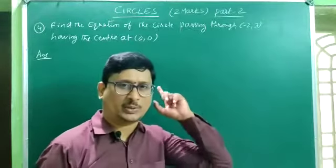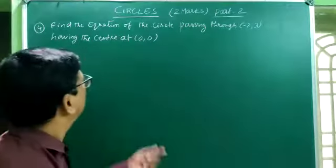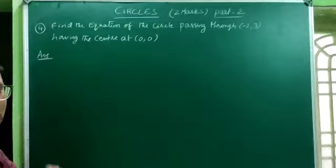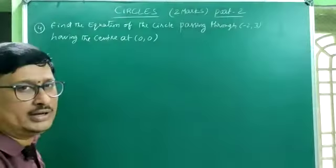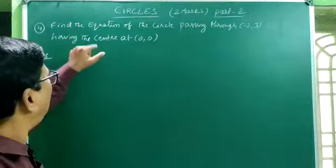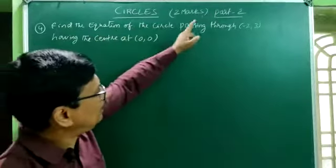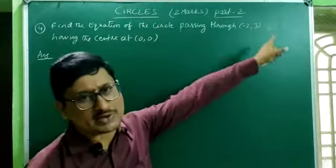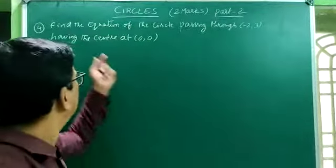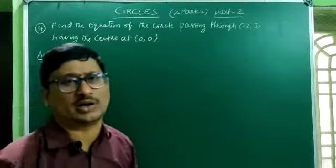Let's go to the next problem: find the equation of the circle passing through (−2, 3) and having the center at (0, 0).